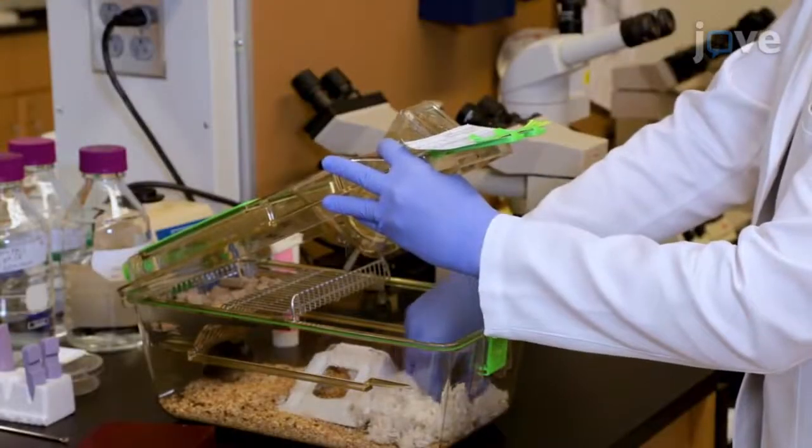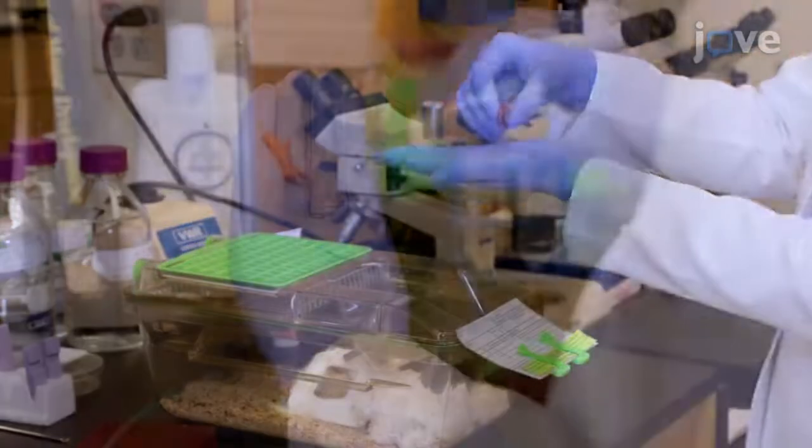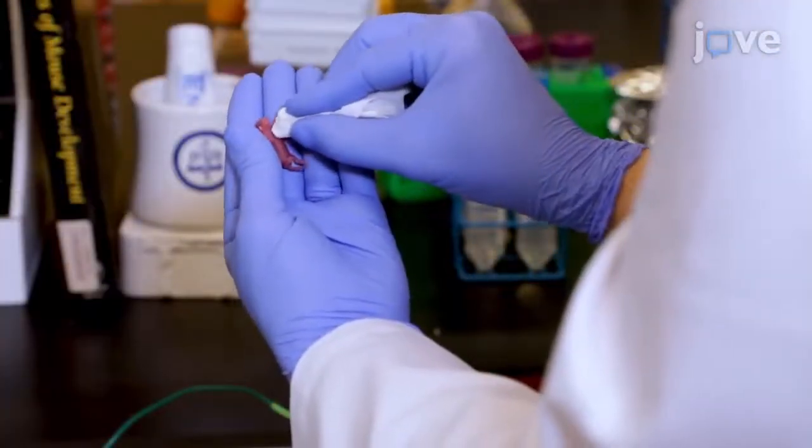After about 15 minutes, remove a mouse pup from its home cage and wipe the thorax with 70% ethanol.